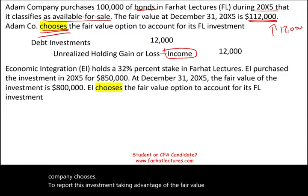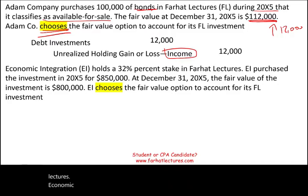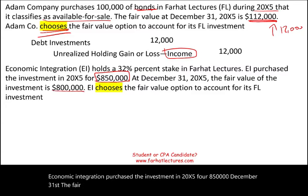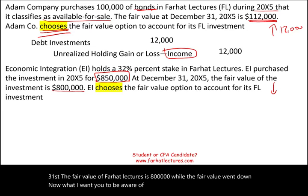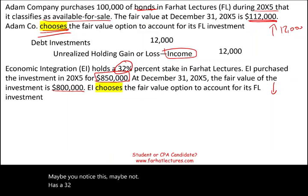Let's take a look at another example. Economic Integration holds a 32% stake in Farhat Lectures. Economic Integration purchased the investment in 20X5 for $850,000. At December 31st, the fair value of Farhat Lectures is $800,000 — so the fair value went down. What I want you to be aware of is this: Economic Integration has a 32% stake, which means under those circumstances they have to use the equity method.